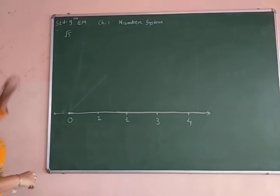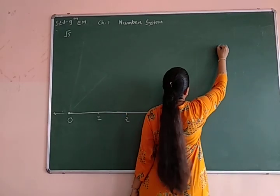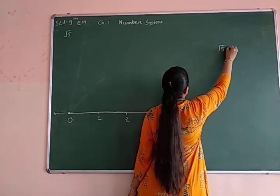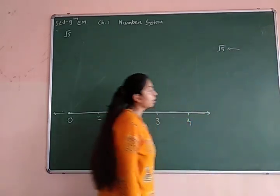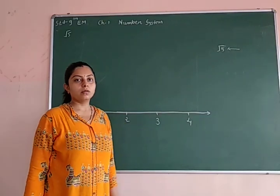See now, root 5 on number line. So root 5. 5 is near to which number? Who is perfect square? That is 4. Clear?